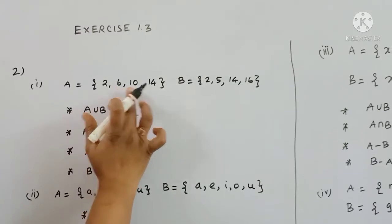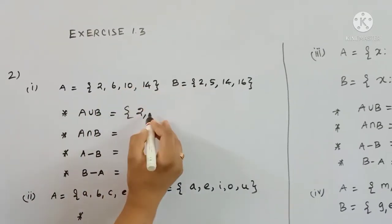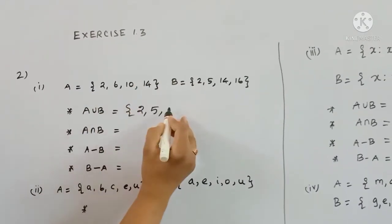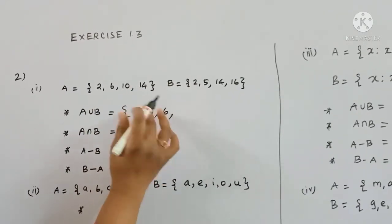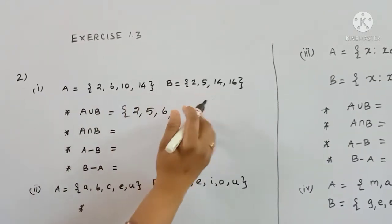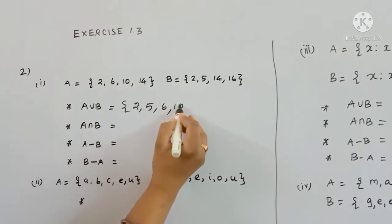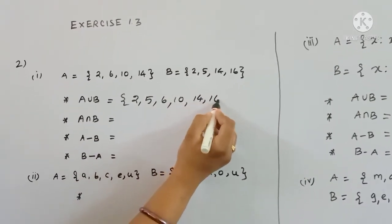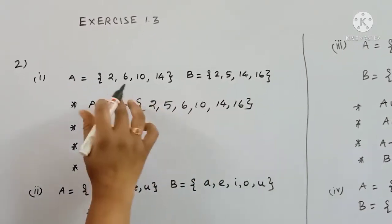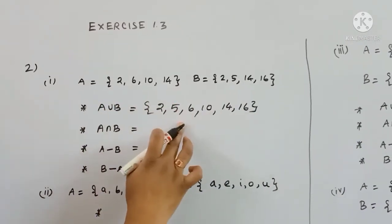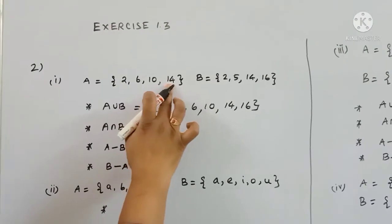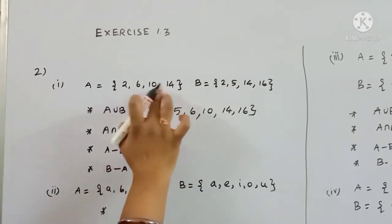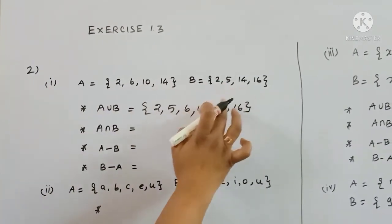The elements listed are: 2, 2, 5, 6, 10, 14, 16. Repetition counts as 1 — so if 14 appears twice or 2 appears twice, it is written once.